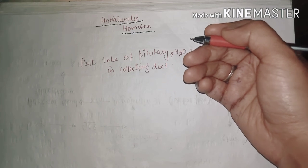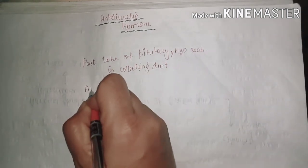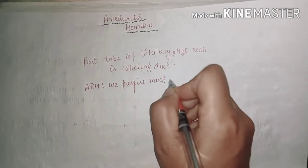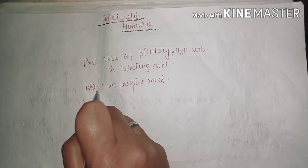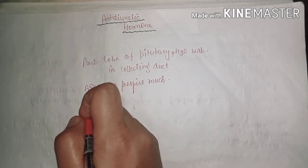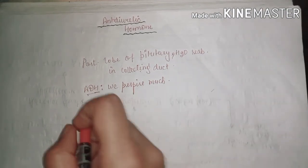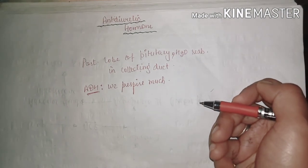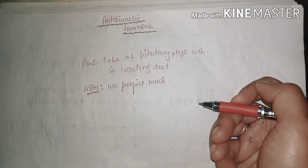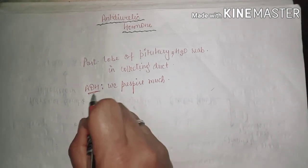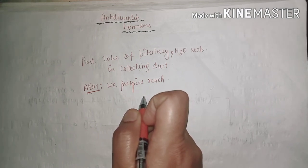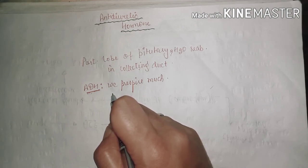Anti-diuretic hormone is released when we perspire a lot or don't drink water. If we drink a lot of water we don't need ADH. When ADH is present it results in a decreased amount of urine. If someone drinks a lot of water and the body doesn't need it, no ADH is formed and a large amount of urine results.